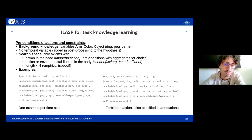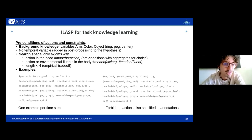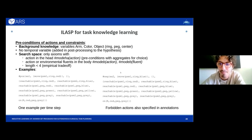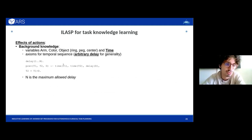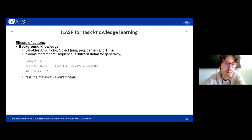We define examples for each time step of the task: one example specifies which action is executed at a specific time step and its context. From manual annotations of experts, negative examples are also provided to learn constraints — which actions are forbidden at each time step. For the effects of actions, the temporal variable is crucial, so we also introduce the concept of temporal delay in the background knowledge, keeping this delay arbitrary and just upper-bounded by a value pair to preserve generality.